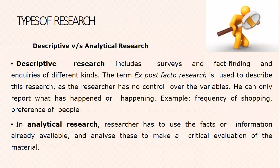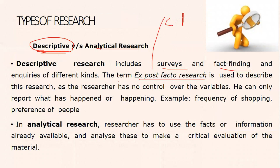The next type is descriptive and analytical research. Descriptive research describes, which can be in the form of surveys or fact finding. It is also termed as ex post facto research, which gives you the relation between cause and effect, as the researcher does not have any control on the variables — he can report only what has happened or what is happening. For example, studying the frequency of shopping preference of people.